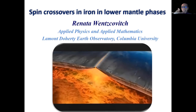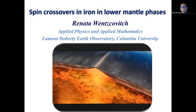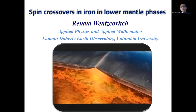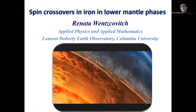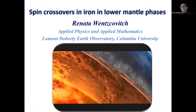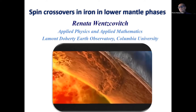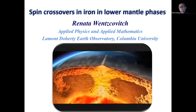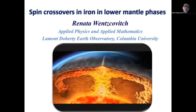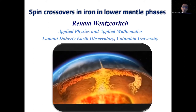Temperature gradients throughout the deep mantle are at most half a Kelvin per kilometer. And the flow — the subsolidus flow — is on the order of a couple of centimeters per year on the surface, even slower in the deep mantle. So this is what we are trying to understand.